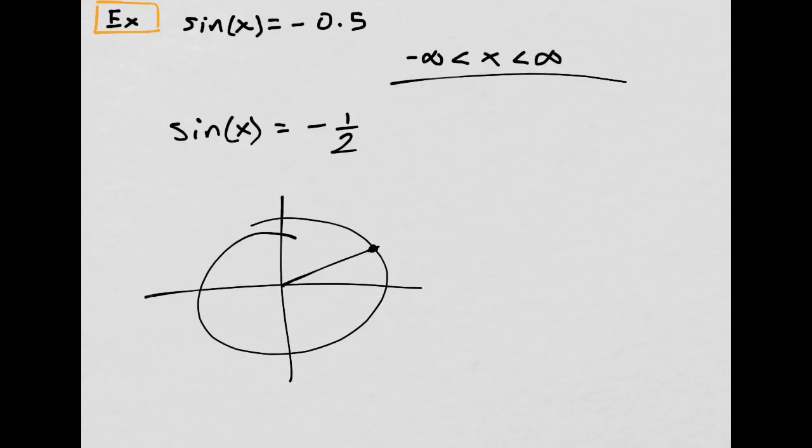So I think sine is one-half here, but I want negative one-half, so it's actually down there. This turns out to be—you could start it with negative π/6. This is negative π/6, I think.